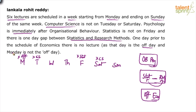Summarizing all constraints: Monday cannot be the off day; Tuesday cannot have Computer Science; Friday cannot have Statistics; Saturday cannot have Computer Science. From the clue-pairs: OB must immediately precede Psychology; Stats and RM have a one-day gap between them; and the off day is immediately before Economics. Starting with OB-Psychology offers too many possibilities since no specific day restrictions apply to OB directly.